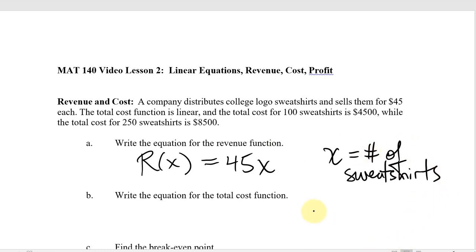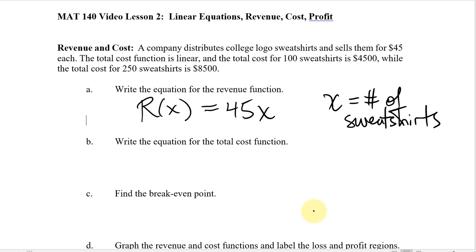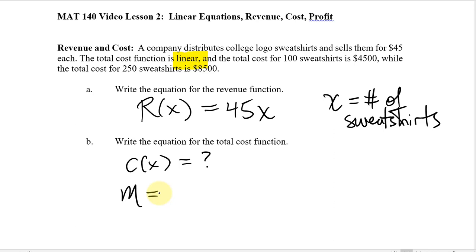Now it says: write the equation for the total cost. In order to figure out the total cost, we have to use the fact that it's linear. Because it's linear, we can assume there's a constant slope, and the equation is Y = MX + B, so we'll try to find the slope.